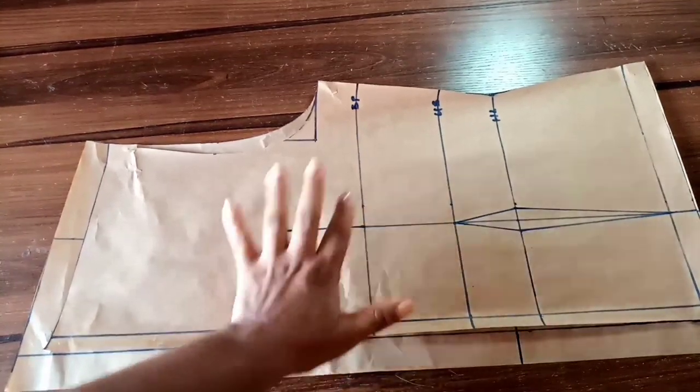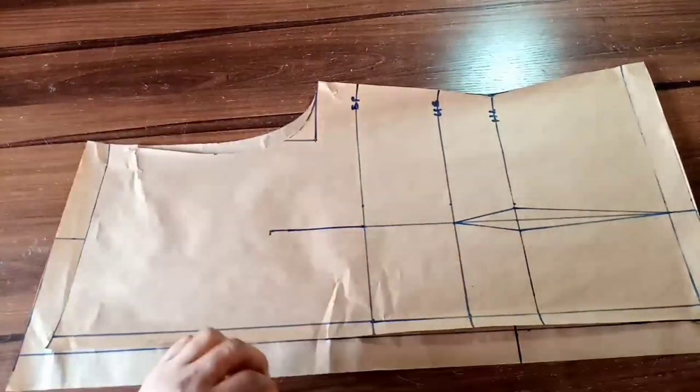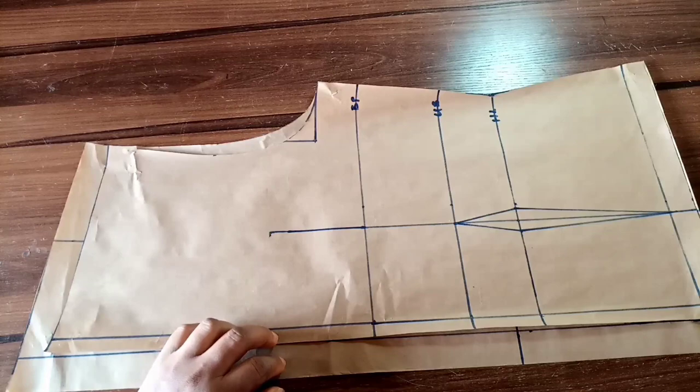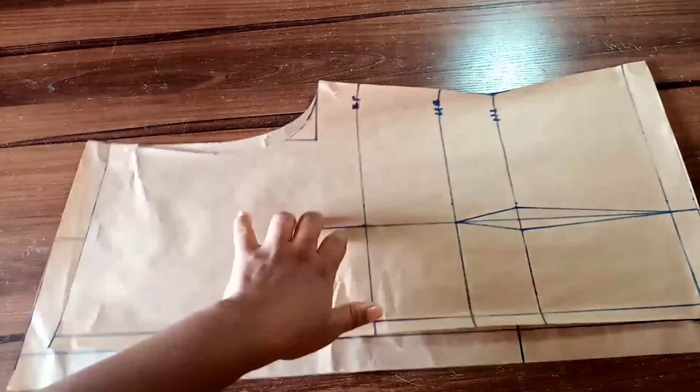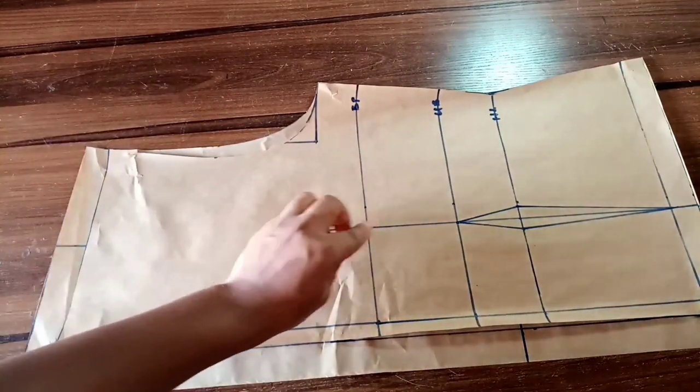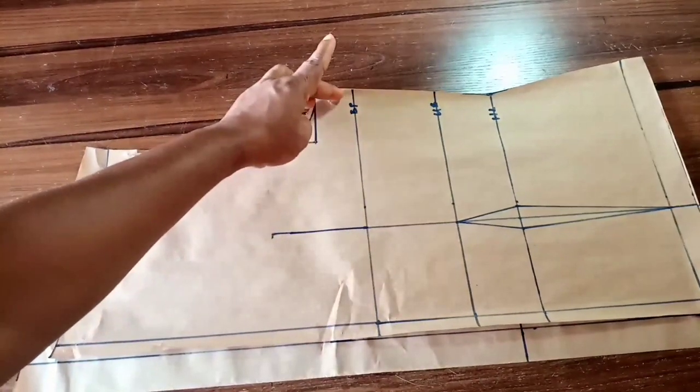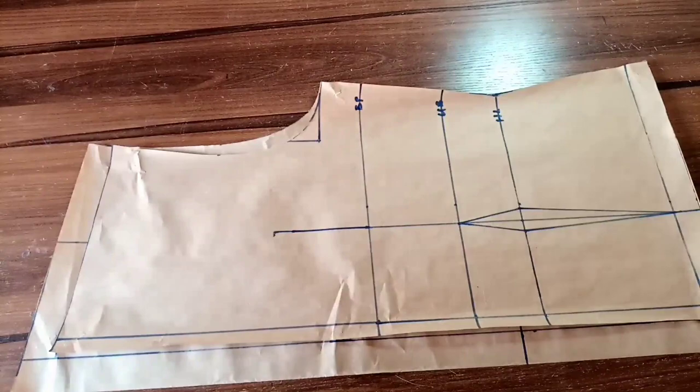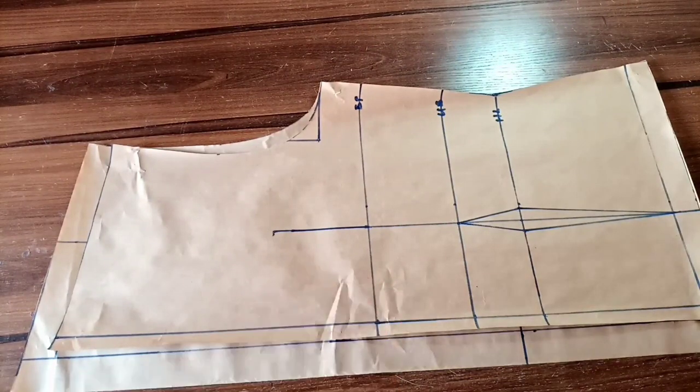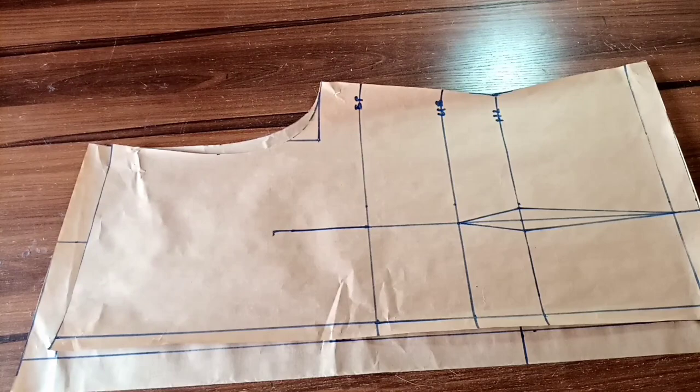So this is the basic bodice. In case you do not know how to draft this, I have a video on my channel on how to draft a basic bodice block. So there's my basic bodice now and there's my nipple to nipple line, my bust point, my underbust, my half lines, and half lines here that will be running in between my boobs.